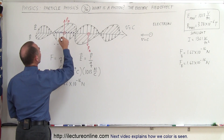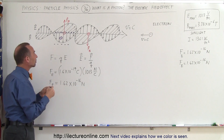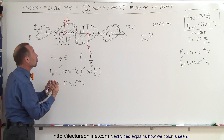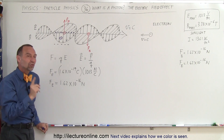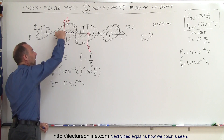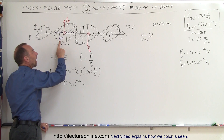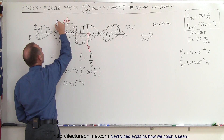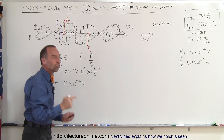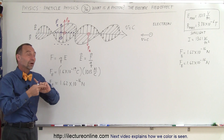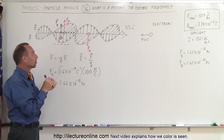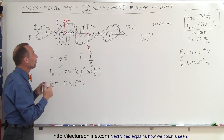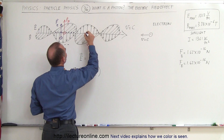Placing the electron there — shown in purple — the electron is going to be attracted to the positive charge and repulsed by the negative charge. Even though we don't really have a charge there, it acts as if there is one, meaning the force on the electron is in the opposite direction of the electric field. Since the electric field is downward here, the electron feels a force in the upward direction — the same direction as the force caused by the magnetic field oscillation.